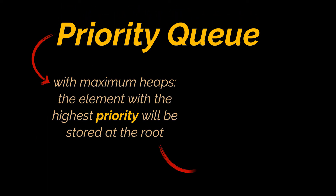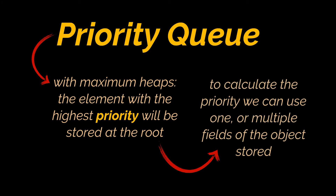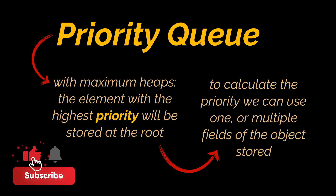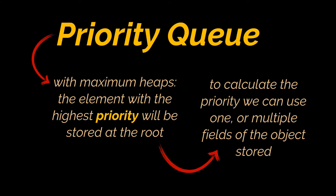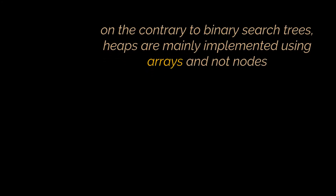In a priority queue, we have to dequeue the values stored in it based on a certain attribute: the priority. This priority is exactly the same thing we just calculated using one or many of the customer class fields. So if the priority queue was implemented with the help of maximum heaps, the element with the highest priority will be stored at the root and the time required to access it or dequeue it will be optimal — in the order of O(1). We just mentioned that heaps are binary trees and are an implementation for the priority queue.